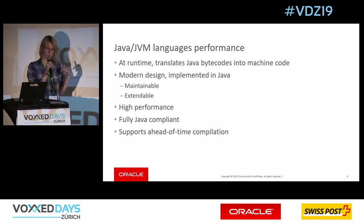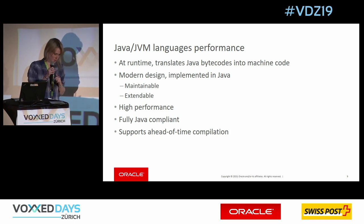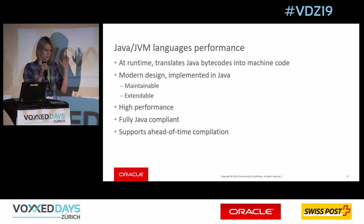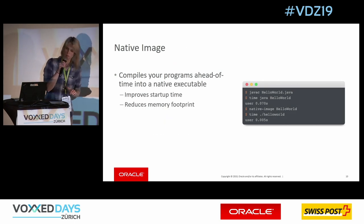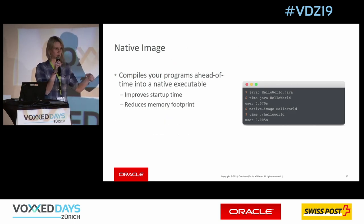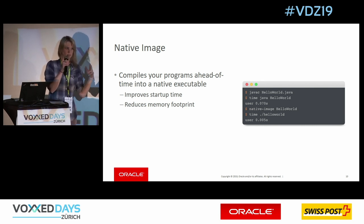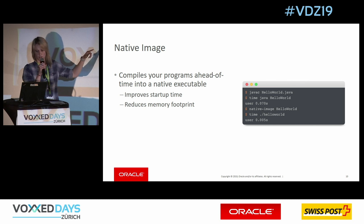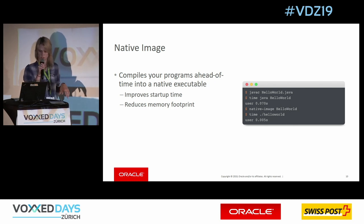Starting with Java and JVM-based language performance: at runtime GraalVM translates Java bytecode into machine code with a modern compiler design especially for new concepts like Stream APIs. It has performance improvements, is maintainable and extensible, focuses on high performance, is fully Java-compliant, and supports ahead-of-time compilation. Looking at the code example: you can compile with javac to bytecode — the command 'javac ExampleApp.java' takes about 0.07 seconds.